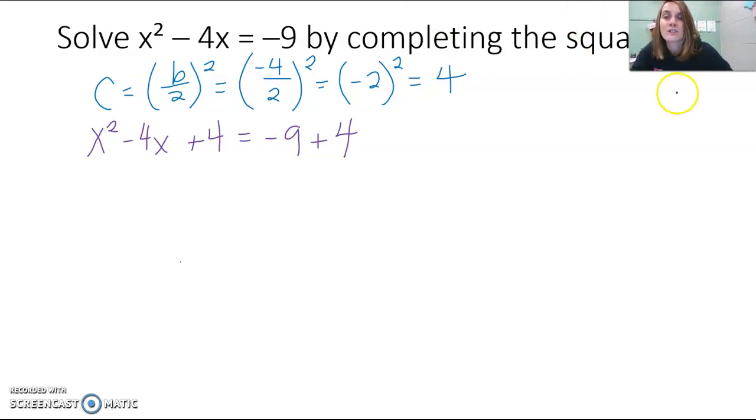So now we're ready to factor x squared minus 4x plus 4. So what factors of 4, what two things multiply to 4 and add to negative 4? The only things that multiply to 4 are 1 and 4 and 2 and 2. 2 and 2 sounds nice. 2 times 2 is 4, but we need a negative 4 when we add. So negative 2 times negative 2 is 4. Negative 2 plus negative 2 is negative 4.